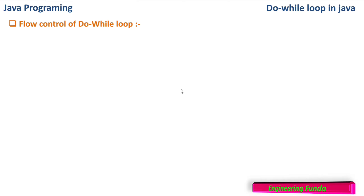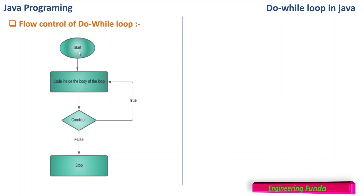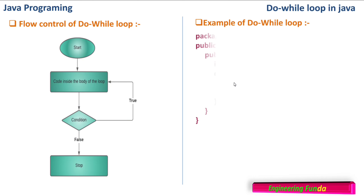Now let us understand the do-while loop with the flow control structure. Here is the flow control structure: first it enters into the body of the loop and executes the code at least once, then it goes and checks the condition. When the condition is true it will again go into the loop and execute the statements, and this repeats. When the condition becomes false it exits from the loop — hence it is called an exit control loop.